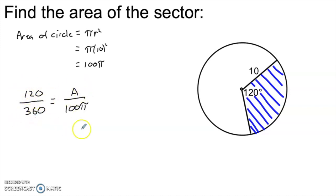Well, then this fraction would also have to be one. The area would be 100 pi. But if it's less than whatever the ratio here, it has to be the same ratio here between the area of the sector and the area of the entire circle. From here, all we need to do is cross multiply and solve for A.